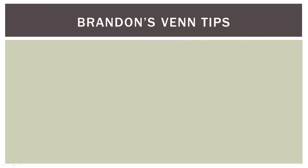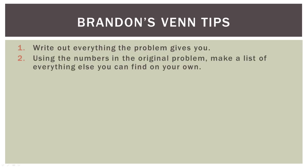So a few Venn tips from me. Number one: write out everything the problem gives you. Use a lot of paper, make lists — it helps you tremendously. The more you put on paper, the less you have to keep in your mind at any one time. Number two: using the numbers in the original problem, make a list of everything else you can find out on your own. In both these problems there were things not given to us in list form, but by looking at the numbers in the Venn diagram, we could write them down. So always look for those things as well.